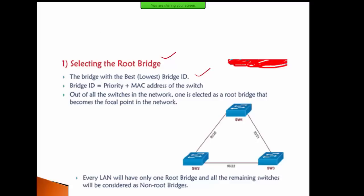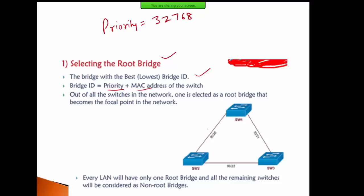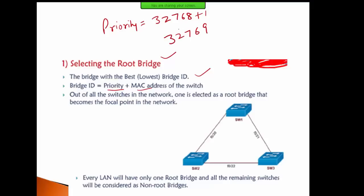The priority match is: by default, all switches have a priority of 32768. By default, all switches belong to VLAN 1. So when you run the show spanning-tree command, the priority by default is 32769 — that is 32768 plus VLAN 1 equals 32769. If you have not configured a root bridge, all switches connect with the same default priority.